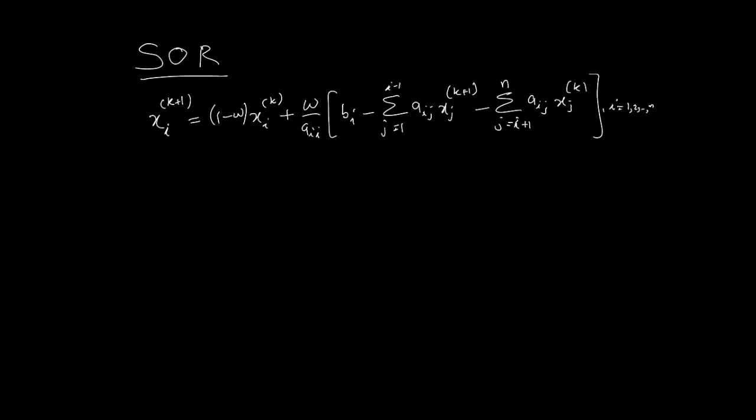Basically what this means is we're retaining some information from the previous iterate. This weightage can be changed and adjusted depending on how quickly or how slowly the method actually is converging.